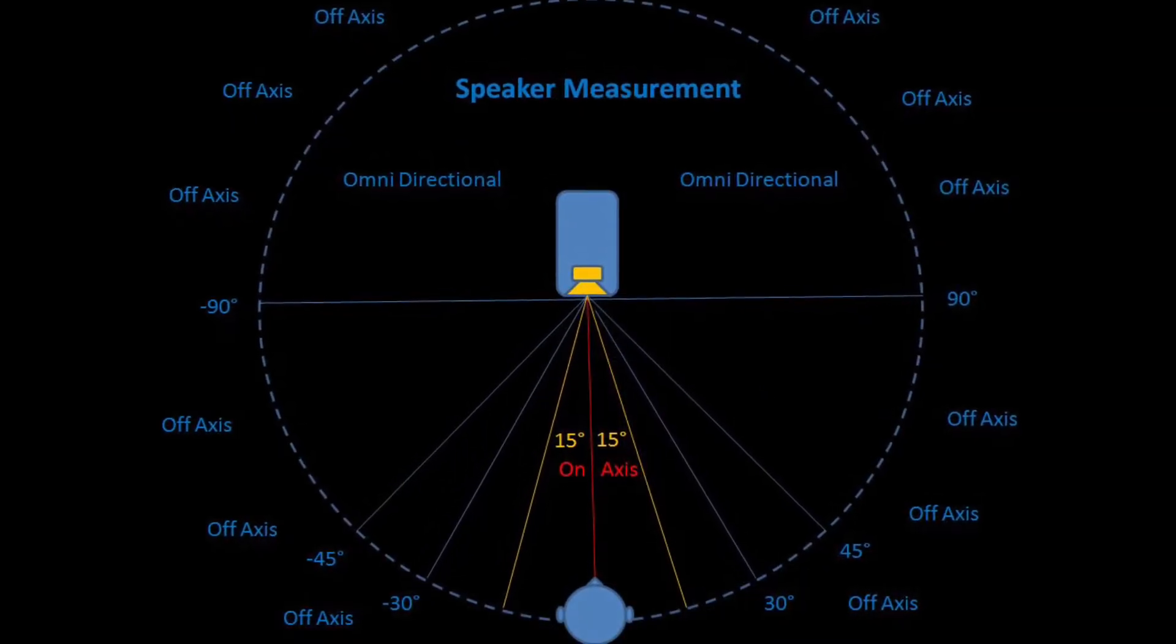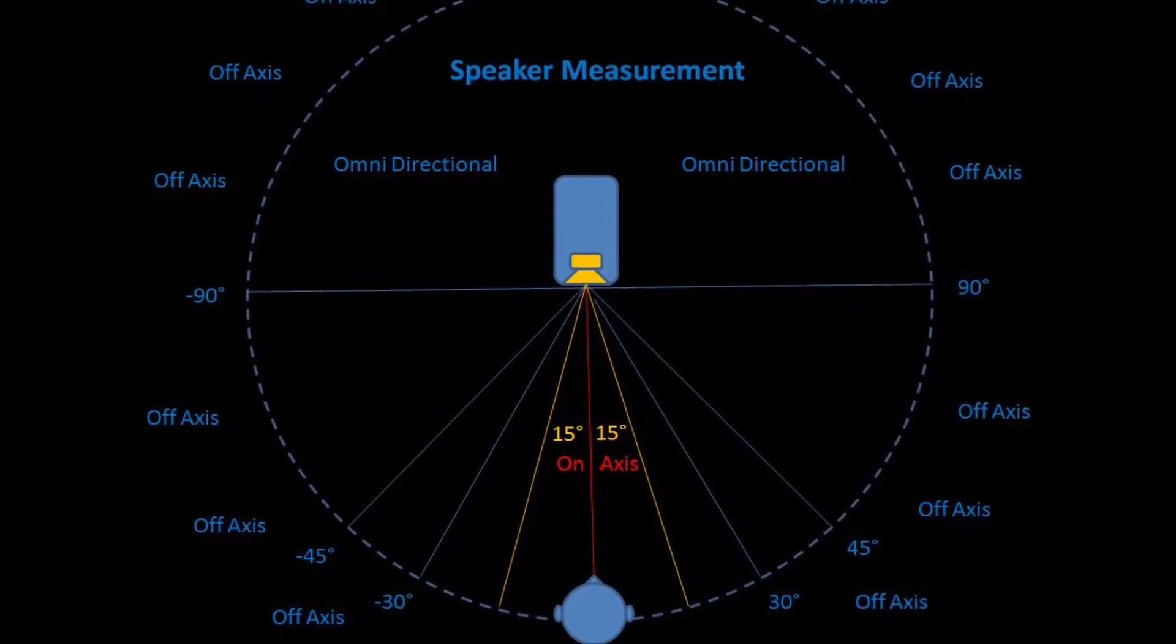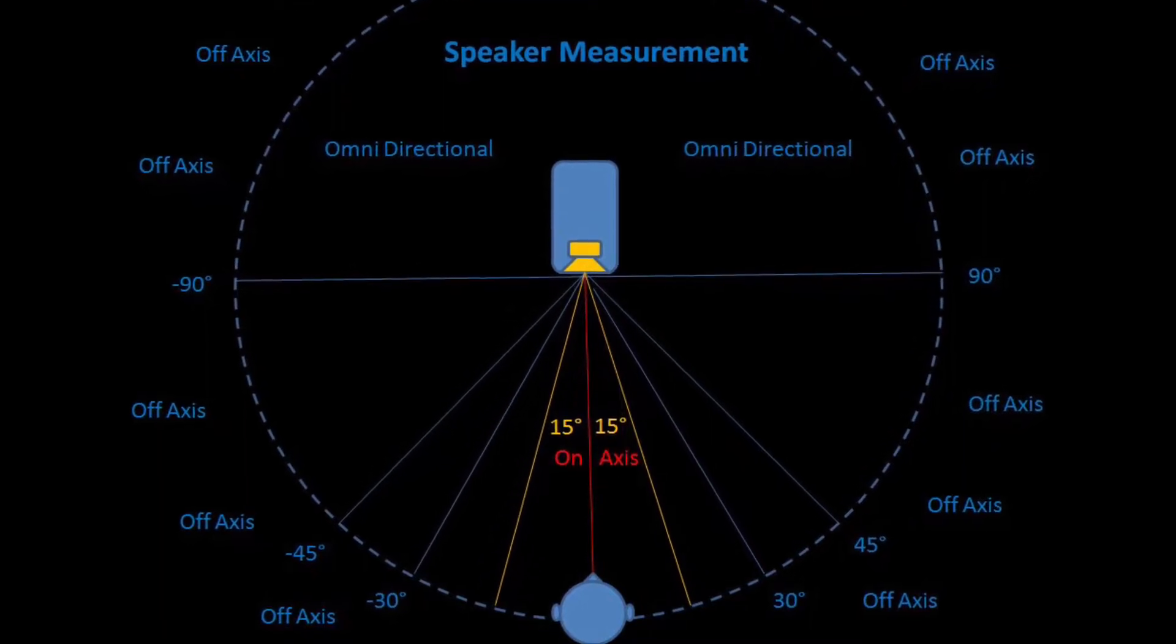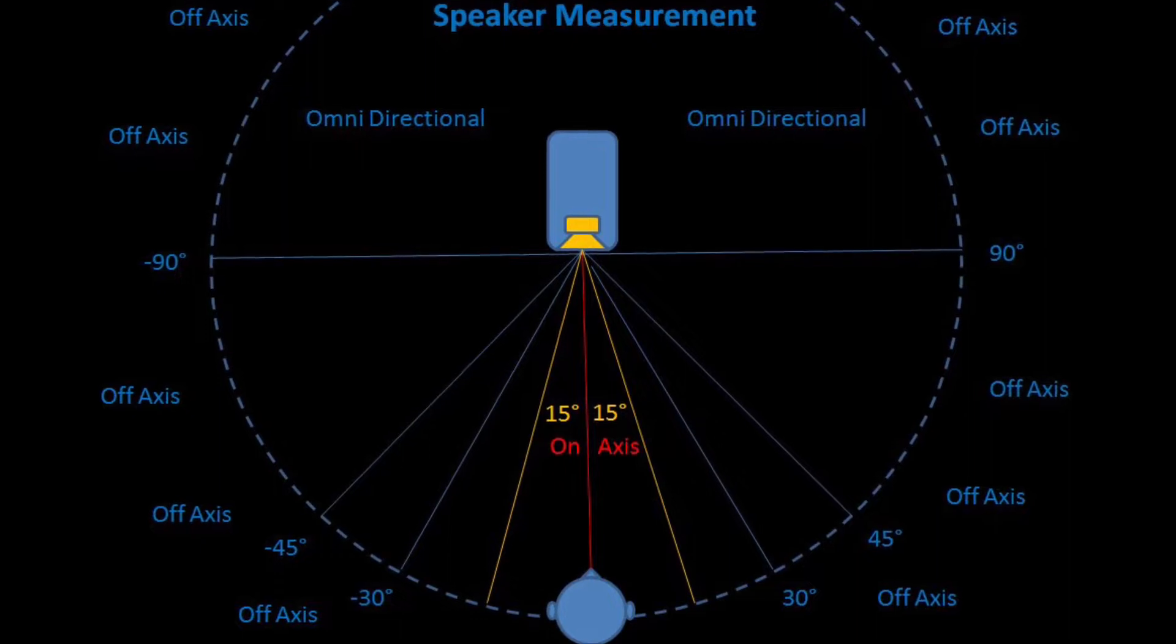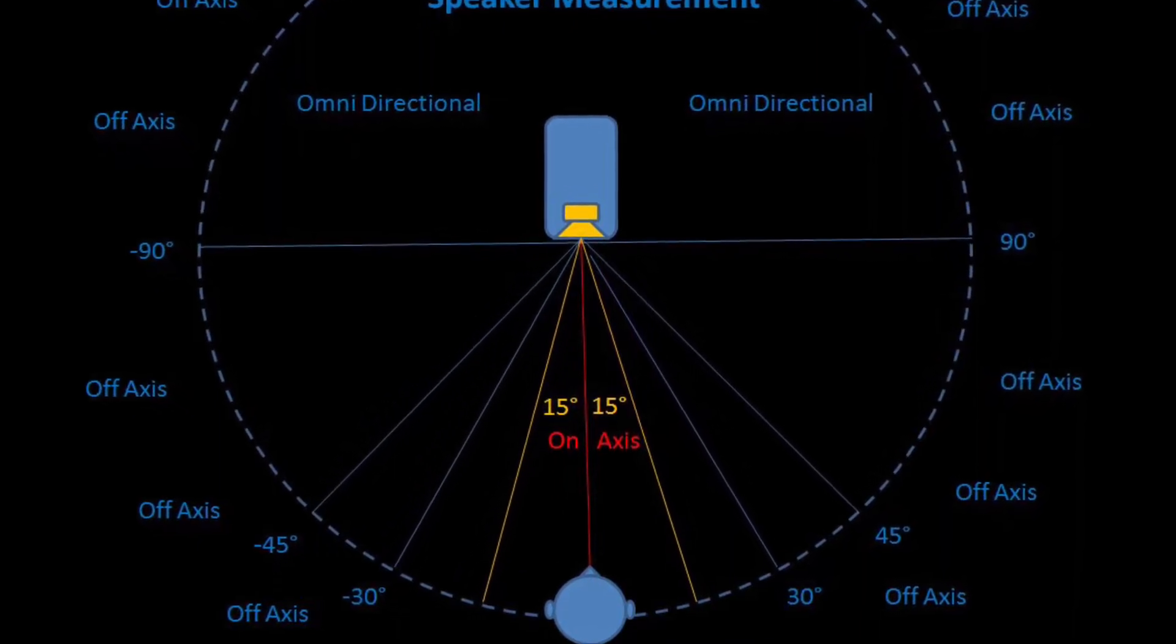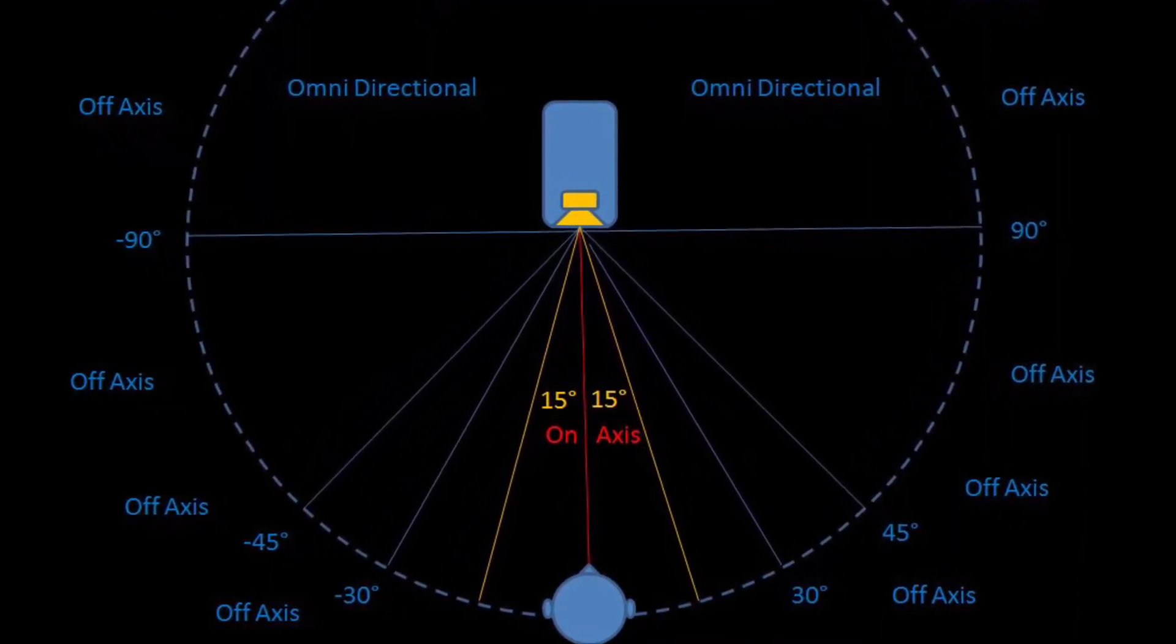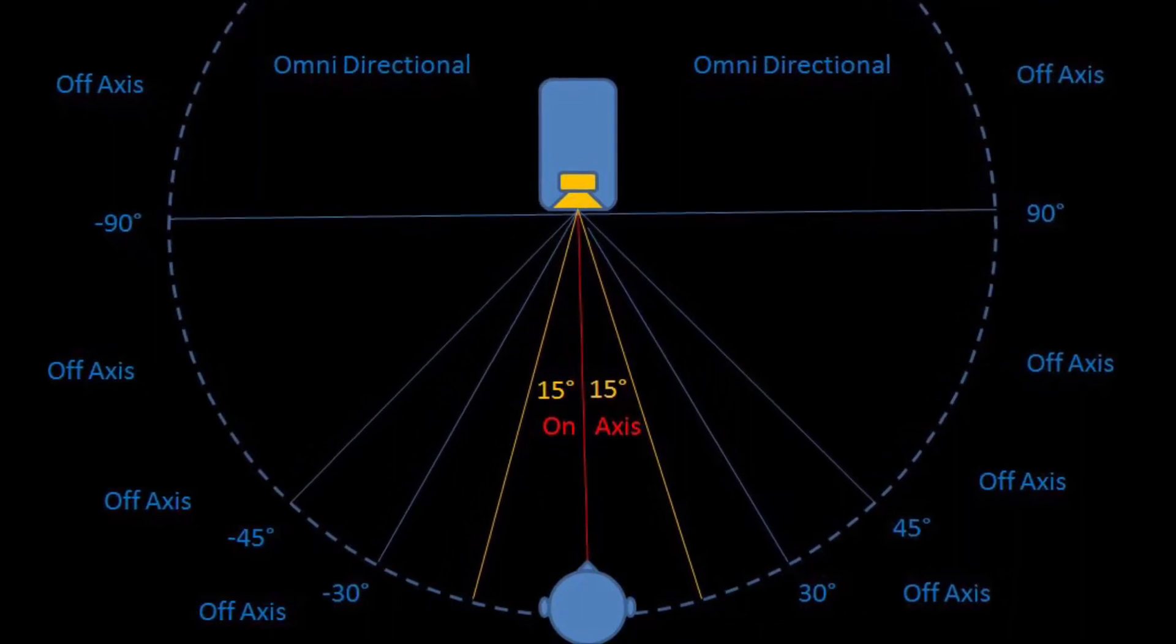The horizontal response plot is based on all the measurements from left to right, shown as off-axis from negative 90 degrees on the left, to the center as on-axis or zero degrees, then to 90 degrees on the right. On the back of the speakers, it is dominated with low-frequency bass as it is omnidirectional.